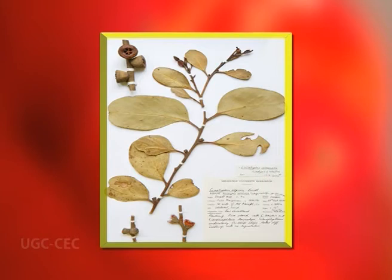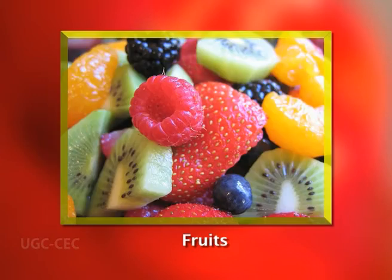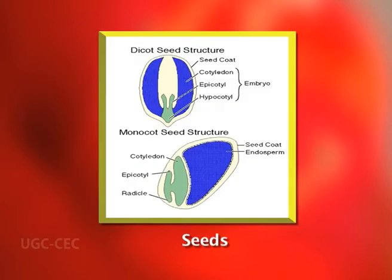Most of the prominent herbaria of the world are arranged according to this system. In this system, the families were arranged as per the increasing complexity of the flower, fruit, and seed development.